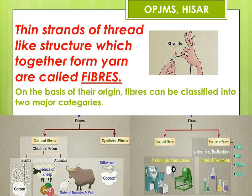With technological innovations and chemical treatments, we are now able to produce many synthetic fibers. These synthetic fibers are produced in factories by various chemical treatments. Nylon, polyester and acrylic are the various examples of synthetic fibers.